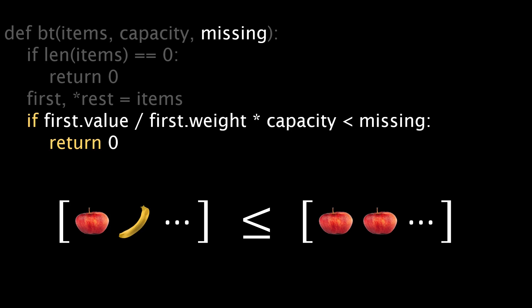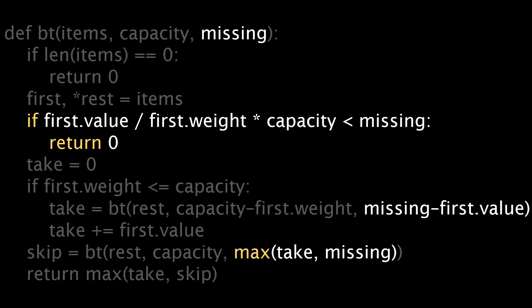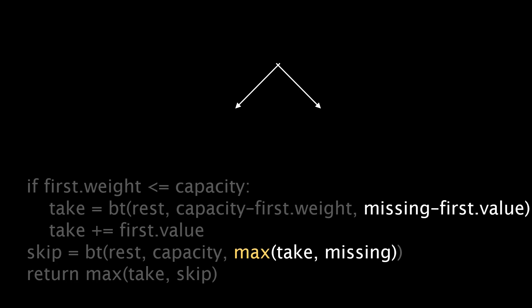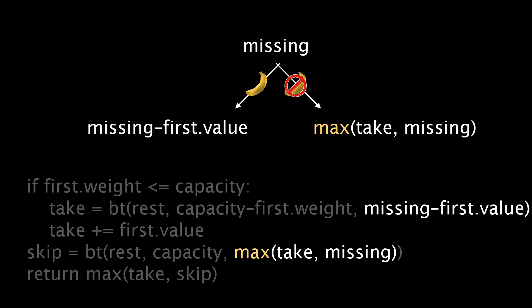In the lower part, we need to compute the right missing parameters. First we look at the left path. In this case we take the first item, now missing reduces by the value of the banana. When we return from the left path, we know how much value we achieved on the left side. This is stored in the take variable. For the right path, we must at least achieve this value, and we also must at least achieve missing. So the new missing becomes the maximum of these two.